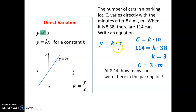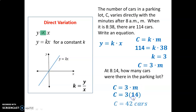Now that we have a model, we can answer questions. So at 8:14, how many cars were in the parking lot? We use our model — we put 14 minutes in and we get the number of cars to be 42. So pretty simple. It's a linear equation. It has this different name, direct variation, because it's a special type of linear equation. To find the slope: y over x, and the equation always looks like y equals kx.